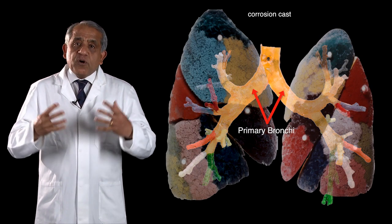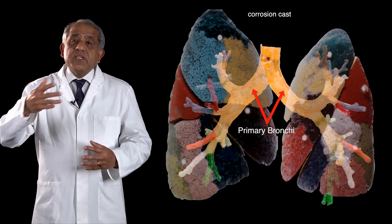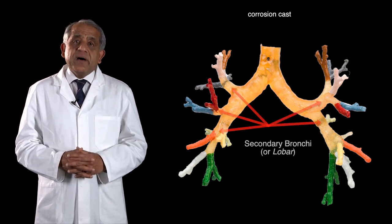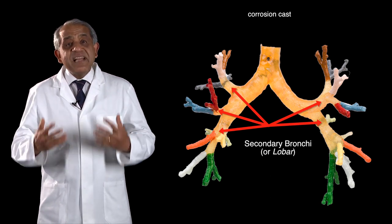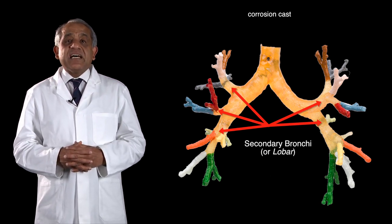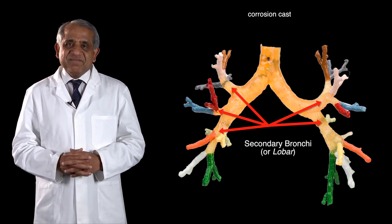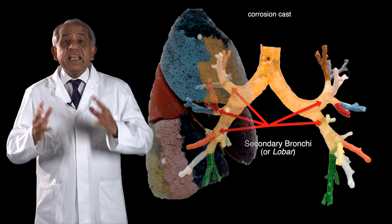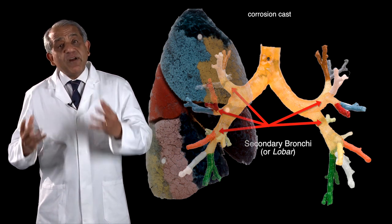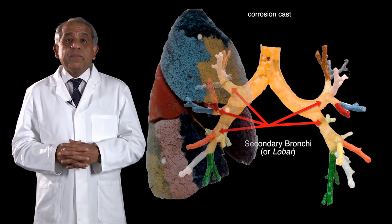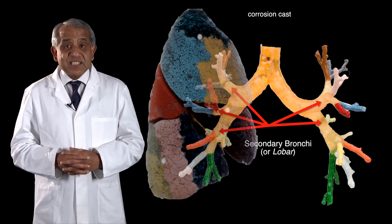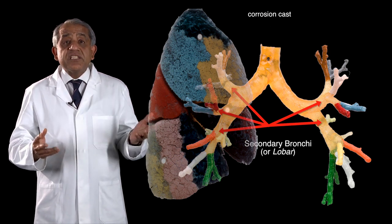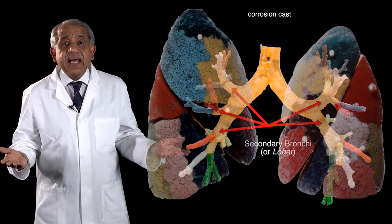Each main bronchus or primary bronchus will break up into the next generation of bronchi, called the lobar or secondary bronchi. The number of lobar or secondary bronchi on each side depends on the number of lobes in that lung. The right lung typically has three lobes, so the right main bronchus breaks up into three lobar bronchi. The left main bronchus breaks up into just two lobar bronchi, because the left lung has just two lobes.